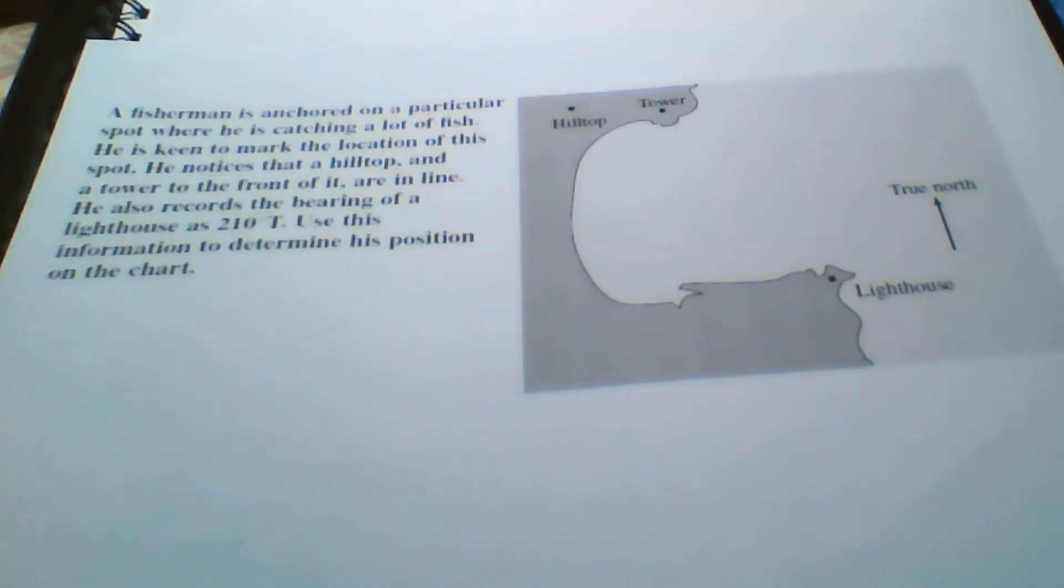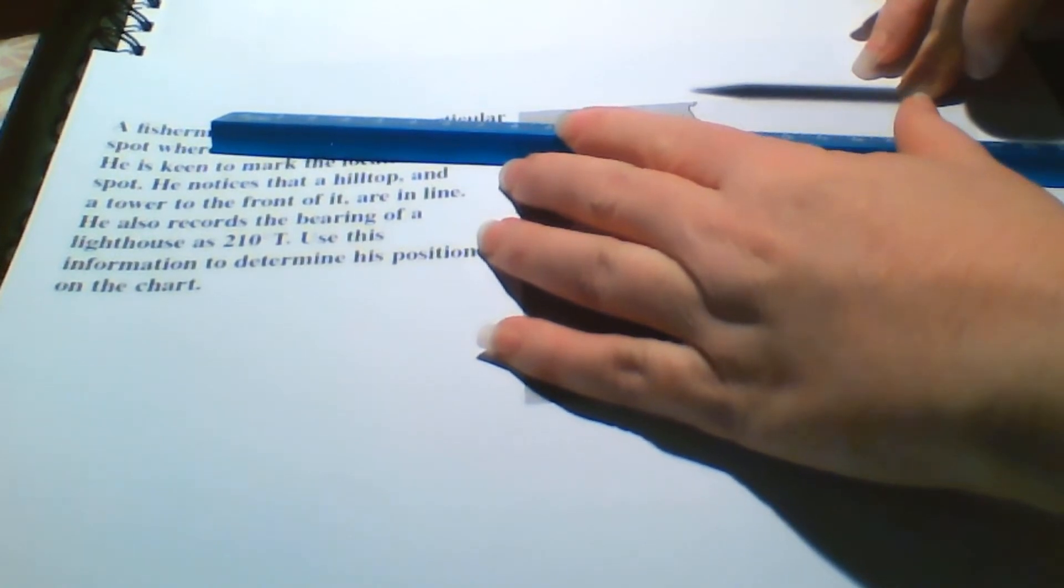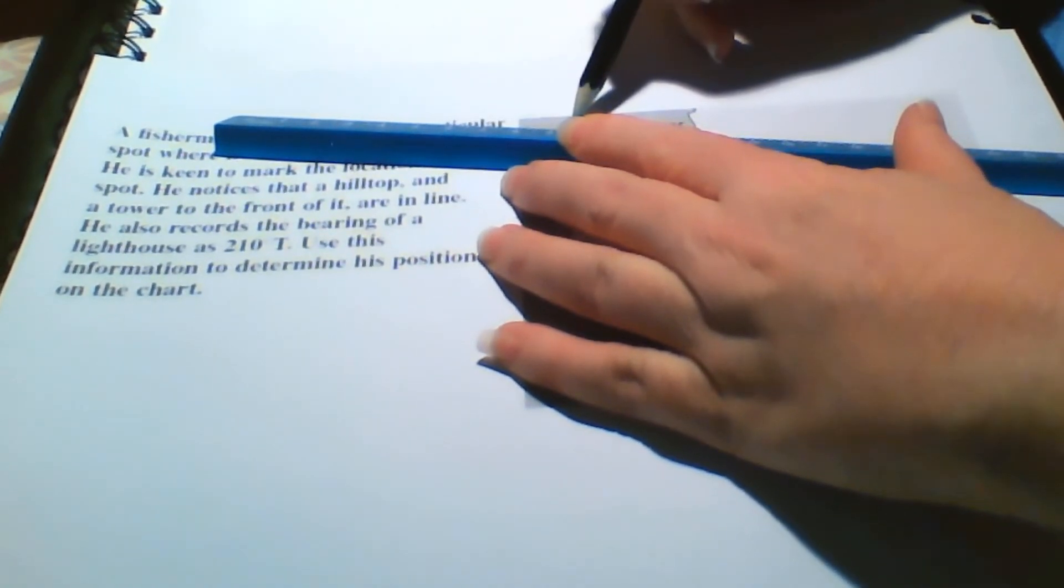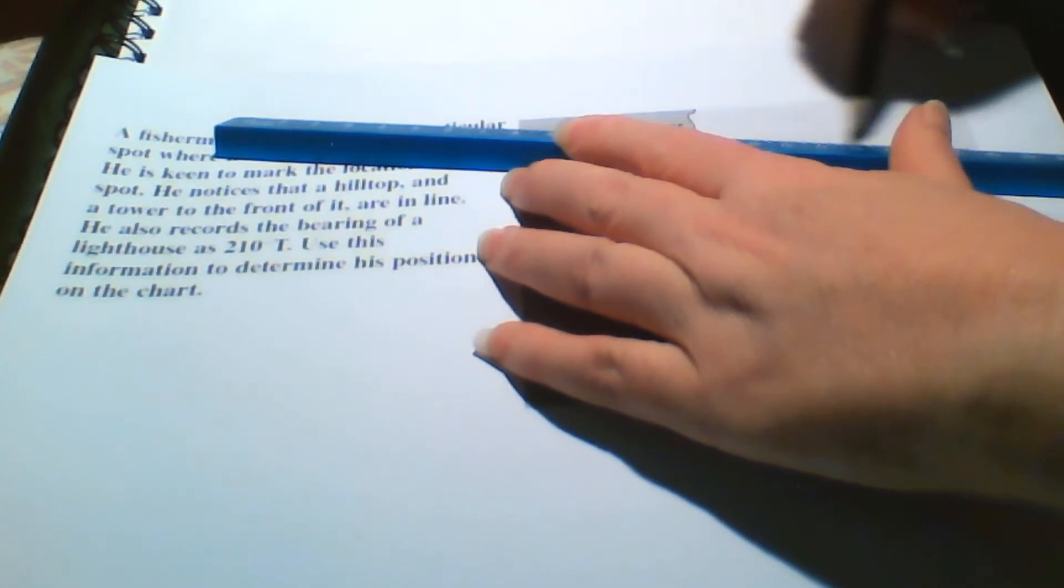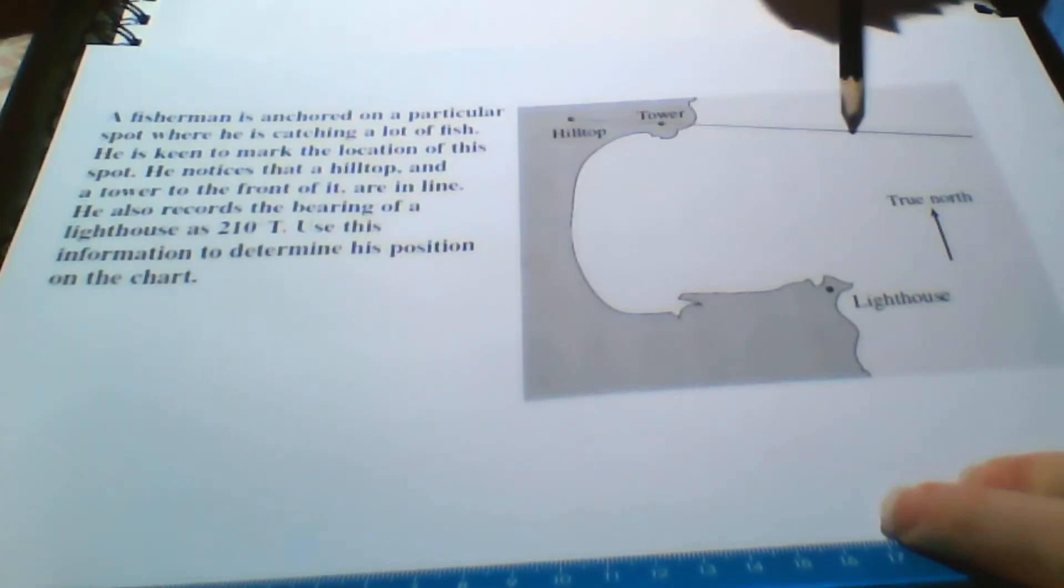So we know that the boat is lined up with the hilltop and the tower. So if we take our ruler and draw a line from the hilltop through the tower and out into the ocean, we now know that the boat is somewhere on this line.